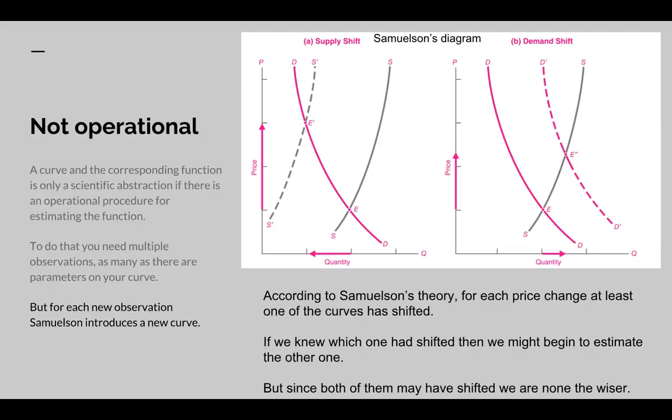That means you can never get a time series of prices and fit these to the curves. Because for every price change, at least one of the curves is altered. Now if these are third order curves, every time there's a price change, that gives us another four free parameters we're going to fit.